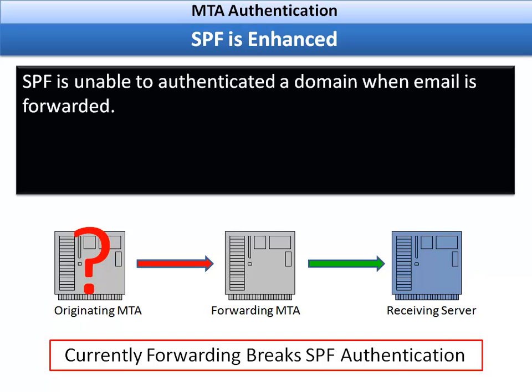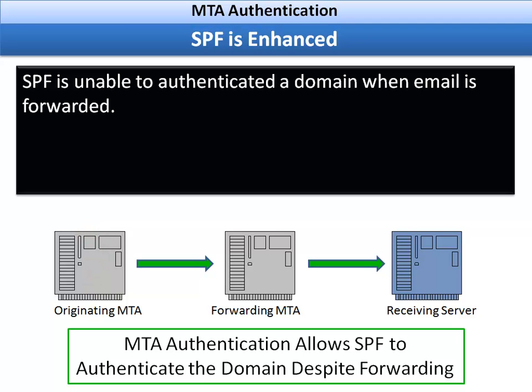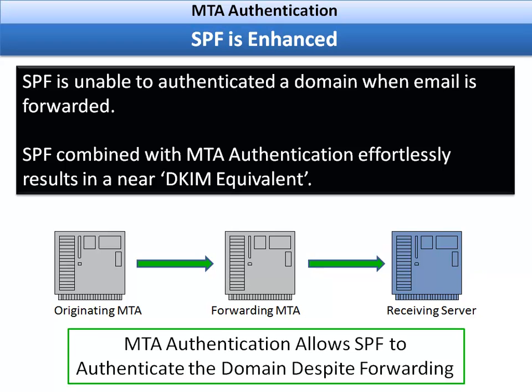SPF will also be enhanced. We know that SPF is unable to authenticate a domain when email is forwarded, but with this system we have now authenticated every MTA listed in the email header. SPF combined with MTA authentication effortlessly results in a near DKIM equivalent — you can forward email, still authenticate the domain, and you are also authenticating the message content itself.